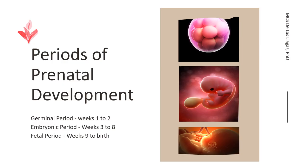The periods of prenatal development include the germinal period, which would be weeks one to two. By the end of the germinal period, you already have a bilaminar germ disc, which would have already been implanted on the uterine lining. The embryonic period would be from the third week to eight weeks of development. It is during this time that the embryo would be completely embedded in the endometrium, and this is the focus of our lecture today.